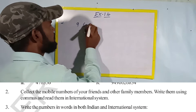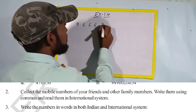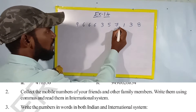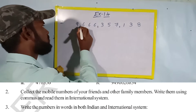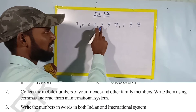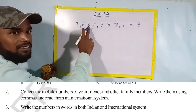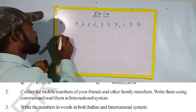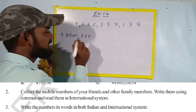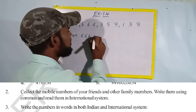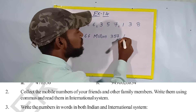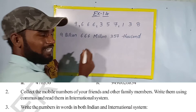My mobile number is 9, 9, 6, 6, 6, 3, 5, 7, 1, 3, 8. Let's read this in the international system — ones, tens, hundreds, thousands, ten thousands, hundred thousands, millions, ten millions, hundred millions, billions. So: nine billion, six hundred and sixty-six million, three hundred and fifty-seven thousand, one hundred and thirty-eight.